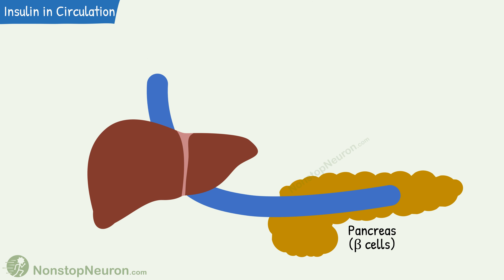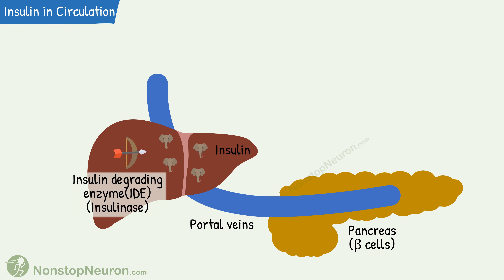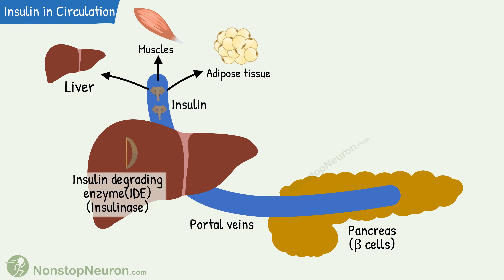As we already know, insulin is secreted from the beta cells of the pancreas. Through portal veins, this secreted insulin first goes to the liver. The liver has an enzyme called insulin degrading enzyme, also known as insulinase. It degrades insulin, and in fact more than half of the insulin is removed from circulation. The insulin that escapes the liver is then available to act on other tissues. The main targets for insulin are liver, muscles, and adipose tissue.